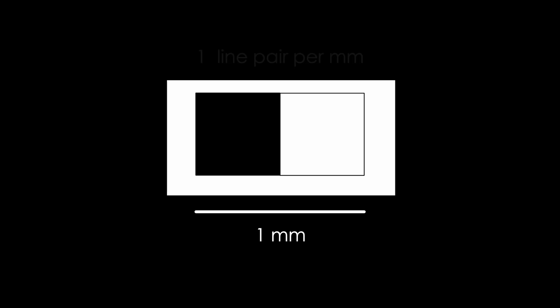In medical imaging, what we care about is useful resolution — how well can we delineate contrasted objects from one another? The way we do this is by measuring the line pairs per distance, usually millimeters. As you can see here, we have a black and a white pair of pixels together measuring one millimeter across, and you can see them perfectly. This would be one line pair per millimeter.